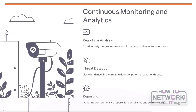Continuous monitoring and analytics are key to keeping our network and users secure. We have real-time analysis that continuously monitors network traffic and user behavior to detect anomalies or suspicious activity. We use advanced AI and machine learning models to identify potential security threats before they can cause damage. We can also generate comprehensive reports to support compliance requirements and security audits, giving stakeholders full visibility into the health of our systems. Together, these capabilities provide a robust security posture that proactively protects the organization.